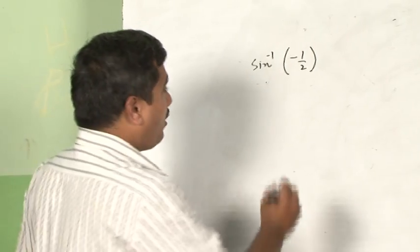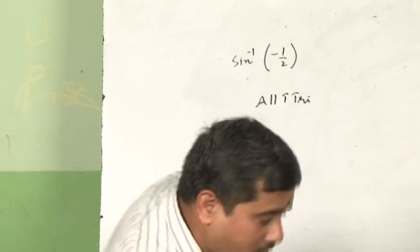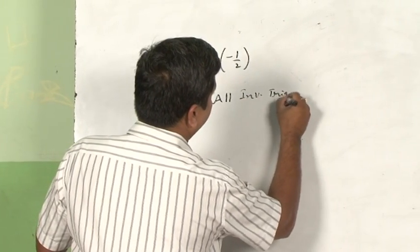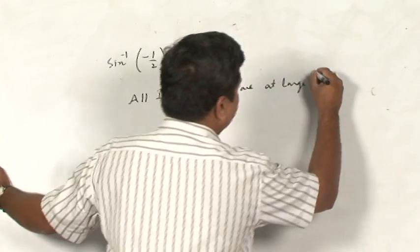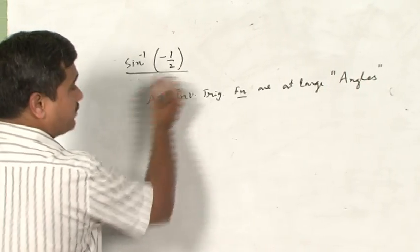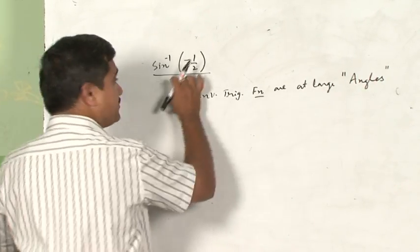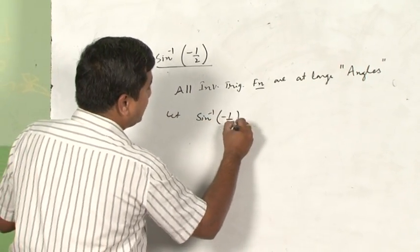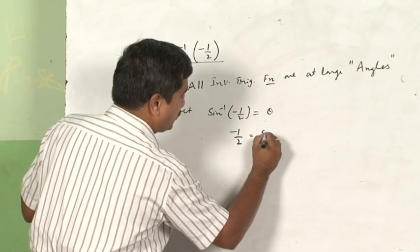Remember, all inverse trigonometric functions are angles. So sin⁻¹(-1/2) should also be an angle. We will start with that definition: let sin⁻¹(-1/2) = θ. Then, taking sin of both sides, we get -1/2 = sin θ.